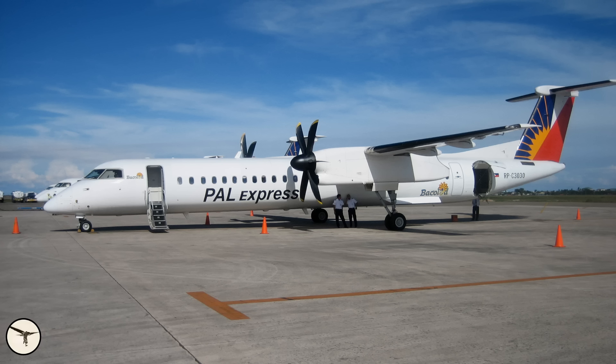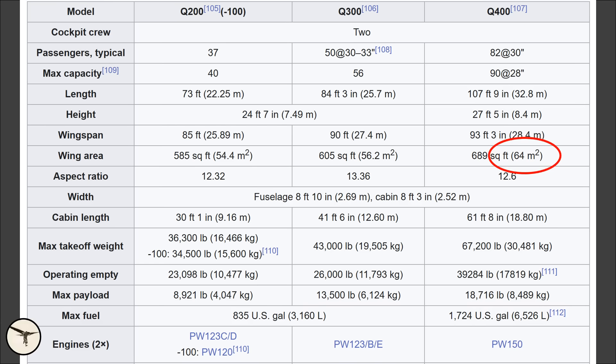In comparison we have the Q400. It has a wing area of 64 square meters and a max takeoff weight of 30,481 kilos. And this gives a very high wing loading. In fact 476 kilos per square meter.